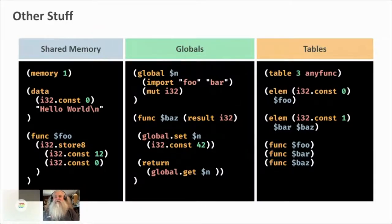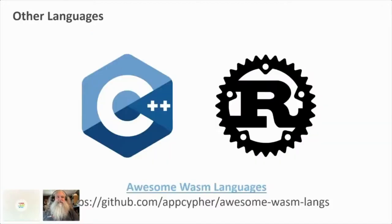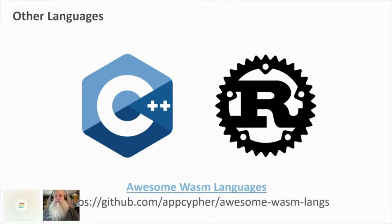If you want to program WebAssembly in something other than WebAssembly text format, the two go-to languages with the deepest support are C/C++ and Rust. Of the two, Rust actually has the better support - just install Rust and you have WebAssembly support, just a particular target to add. There are also a lot of others - go to the Awesome Wasm Languages link, and COBOL was even on the list. So there's a lot of stuff happening in the WebAssembly space.